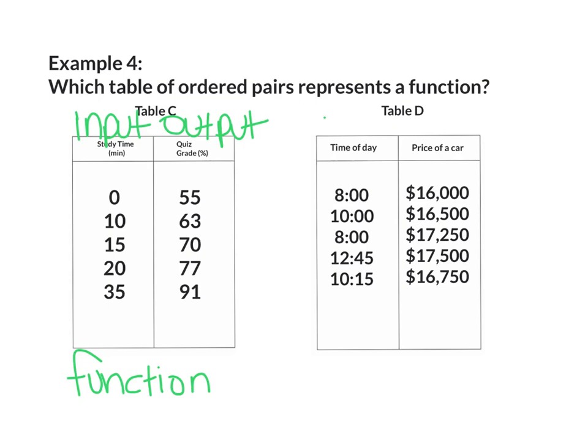Now on table D, my time of day is my input and my price of a car is my output. I have an input of 8 o'clock, 10 o'clock, 8 o'clock, 12:45, and 10:15. I notice that 8 o'clock is being repeated twice. Does it have the same output? It has 16,000 and it has 17,250. Because these are different values, this is not a function.